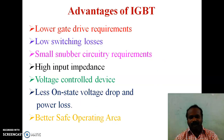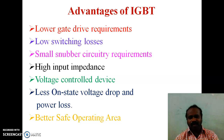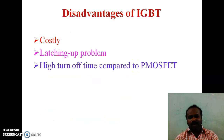Advantages of IGBT: lower gate drive requirements, low switching losses, small snubber circuit requirements, high input impedance, voltage controlled device, less on-state voltage drop and power loss, and better safe operating area. Disadvantages of IGBT: it is costly, latching-up problem occurs, and high turn-off time compared to power MOSFET.